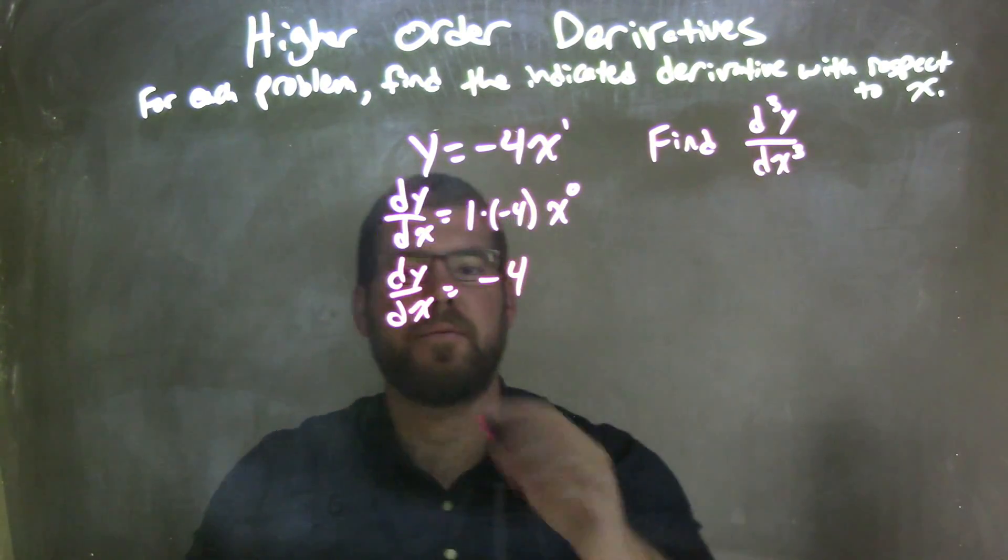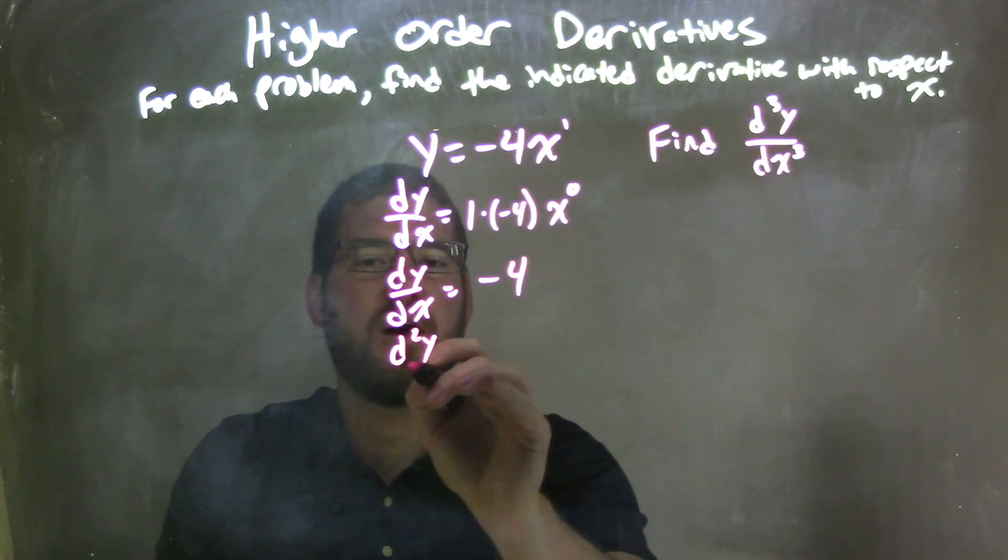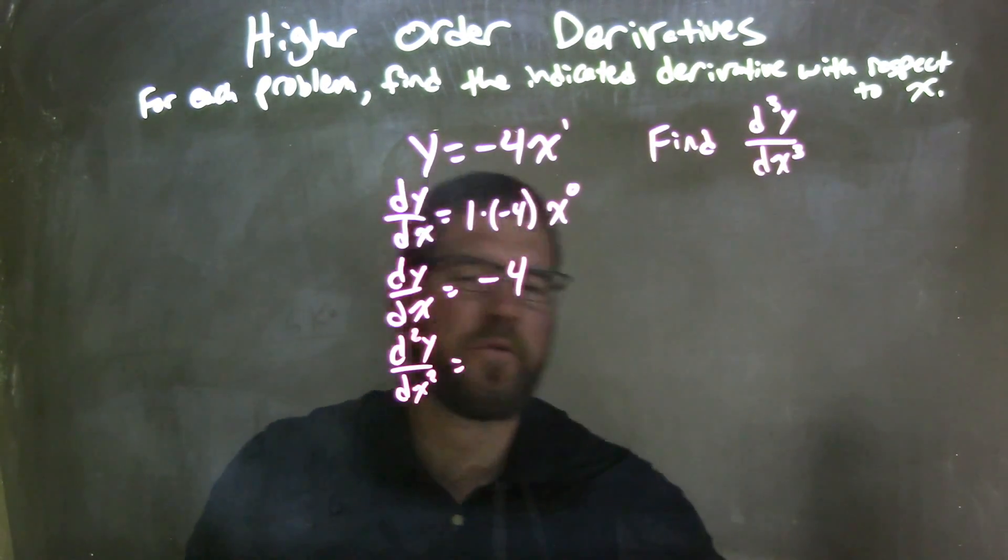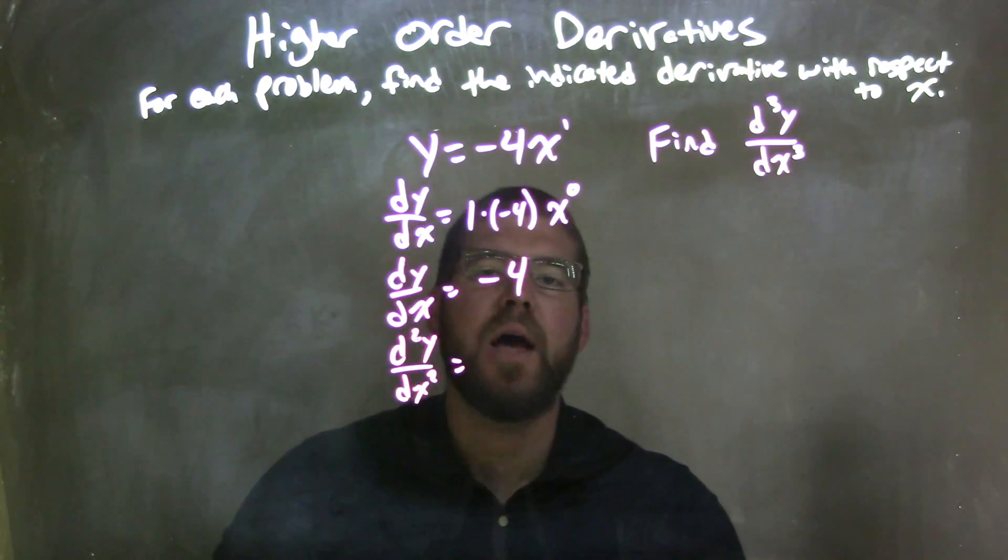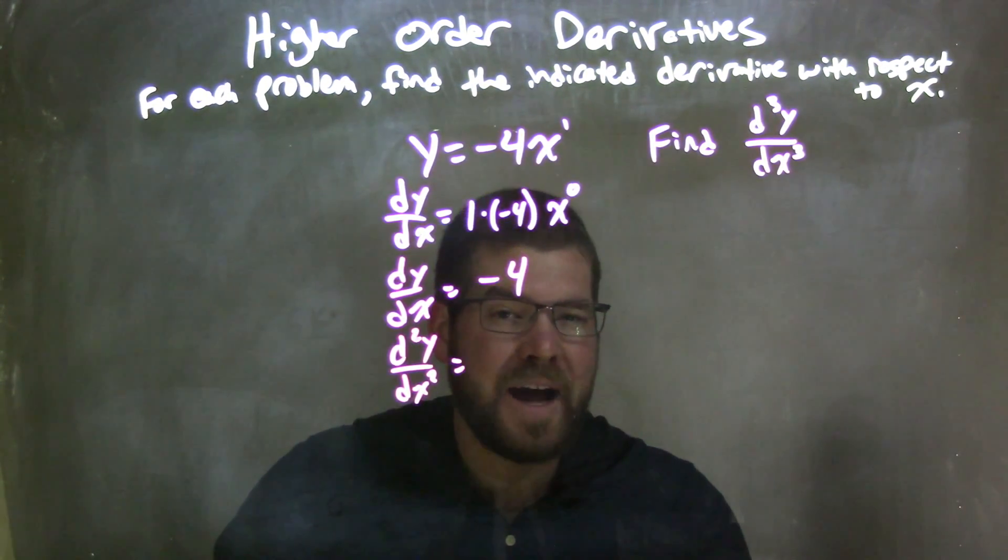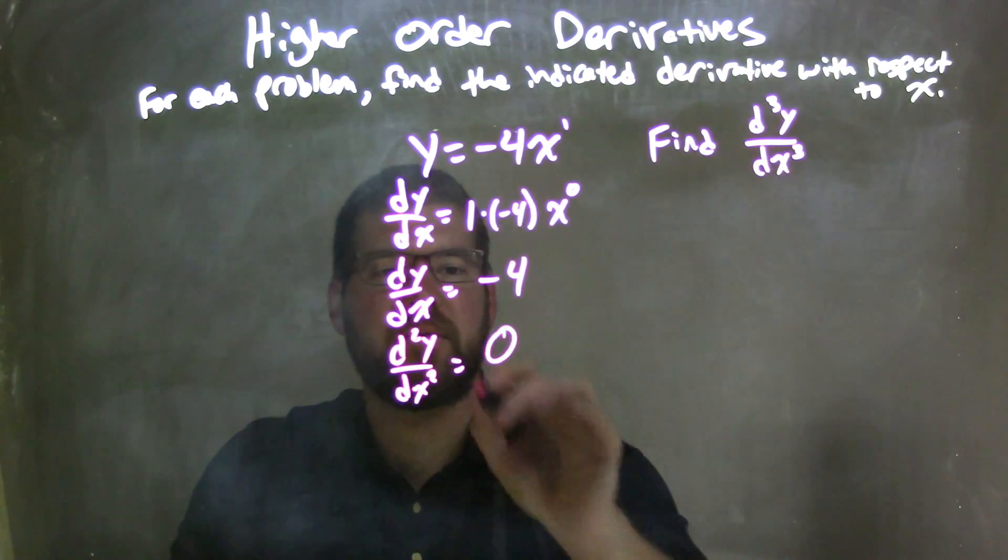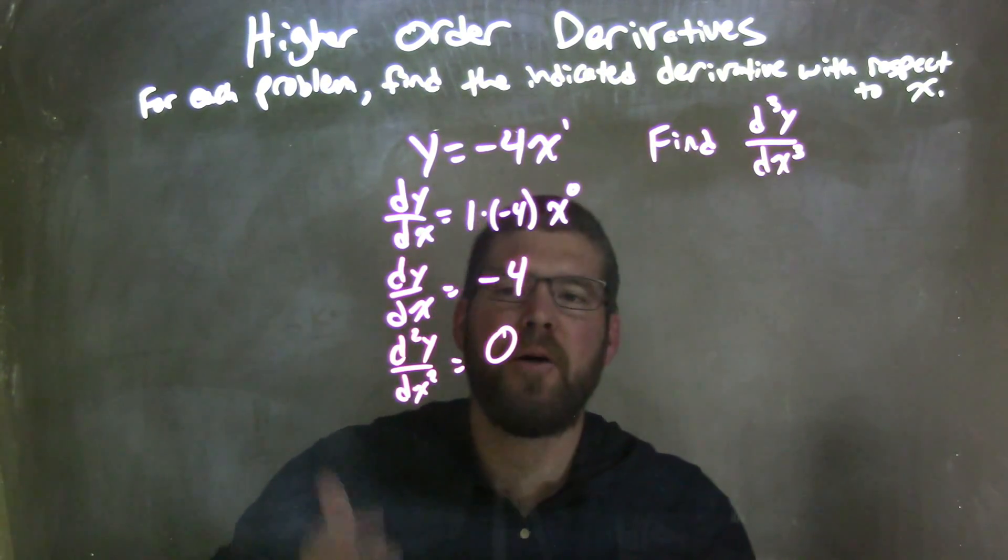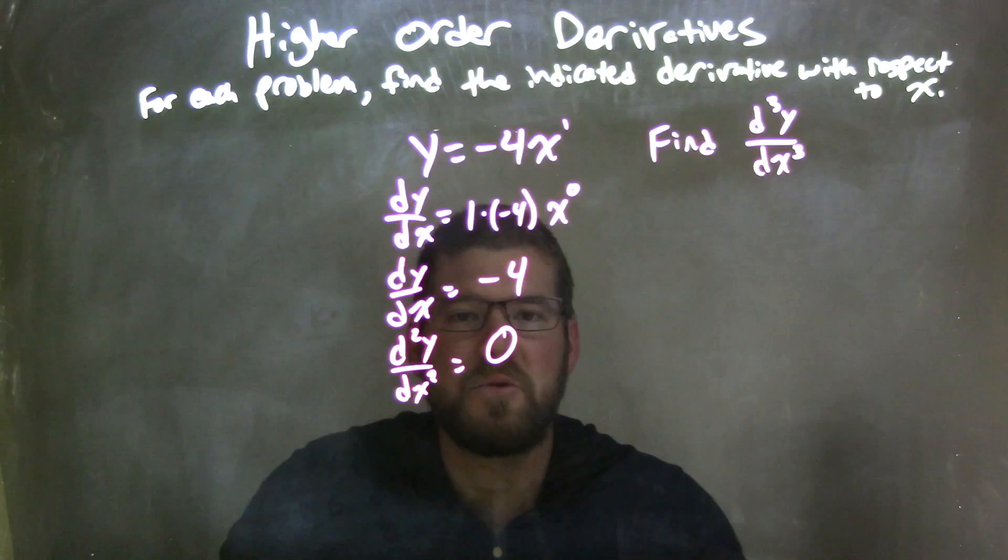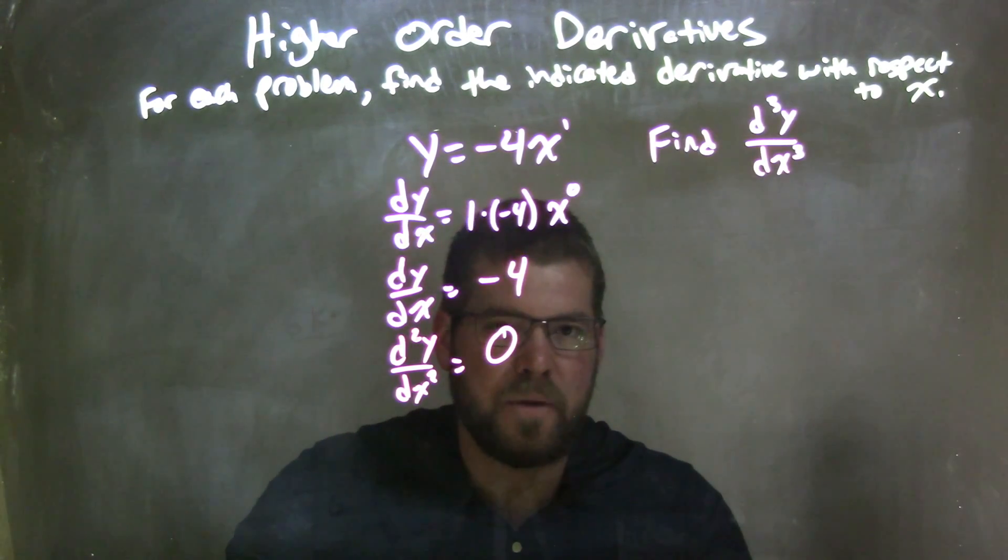Second derivative, d²y/dx². Well, negative 4 is just a constant, and the derivative of a constant is just 0. So by the second derivative, we have a derivative that is equal to 0.